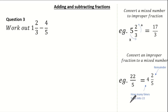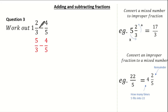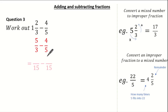Now we know the difference between a mixed number and an improper fraction, let's give this past exam question a go. We have to convert 1 and 2 thirds into an improper fraction: 1 times 3 is 3, add the 2 is 5, so my mixed number becomes 5 over 3. And I'm still subtracting my 4 fifths. We have different denominators, so we need to identify the lowest common multiple. The lowest common multiple of 3 and 5 is 15.